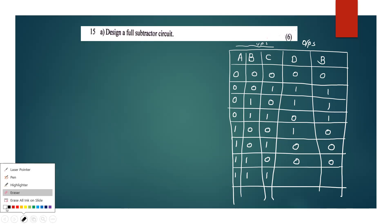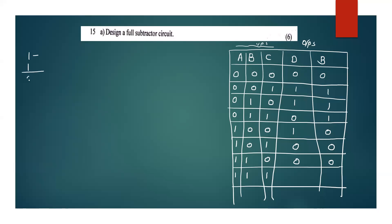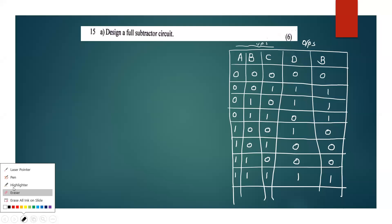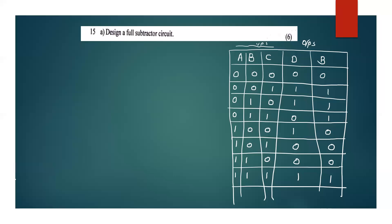The answer for 1 minus 1 is 0. For 0 minus 1, you get value 1. Now the answer is 1 with the borrow of 1. The values are: A value 0, B value 0, C value 1.